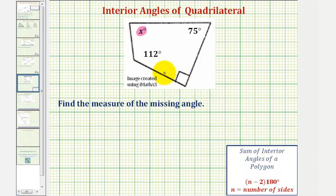The sum of the interior angles of a polygon can be found using the formula, the quantity n minus two times 180 degrees, where n is equal to the number of sides.